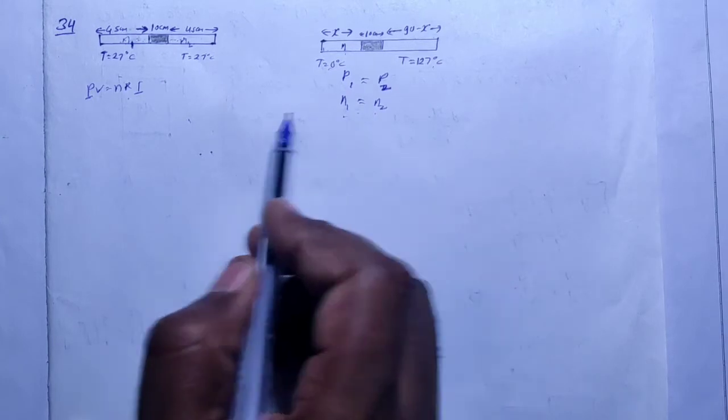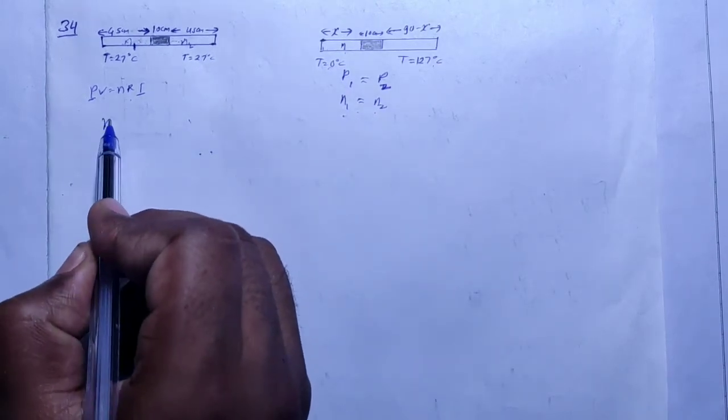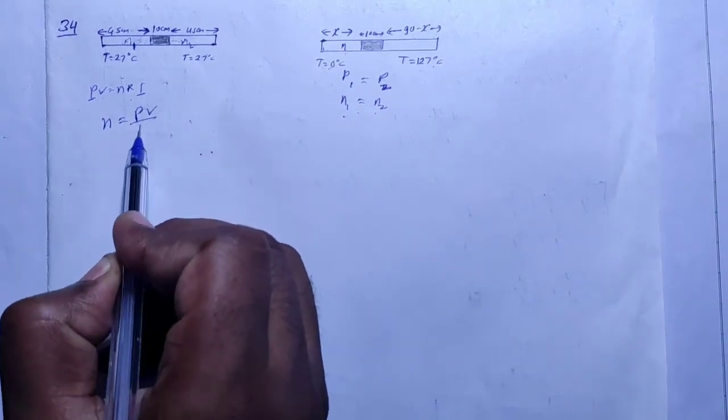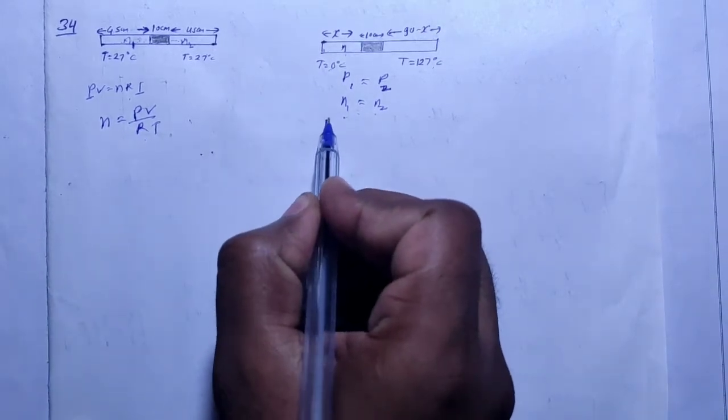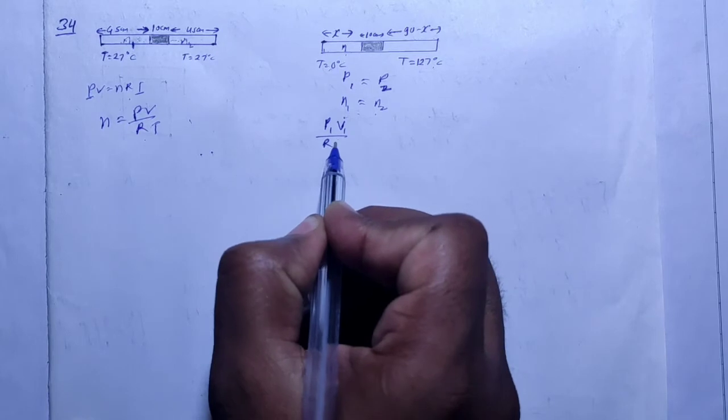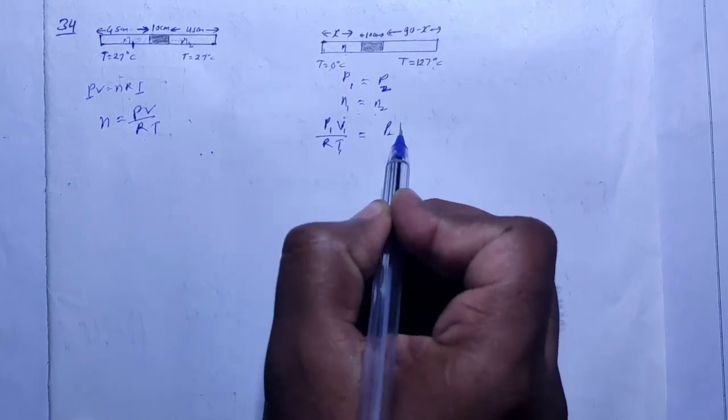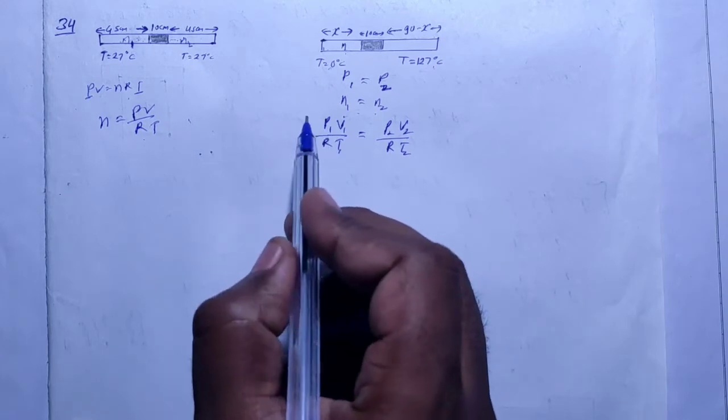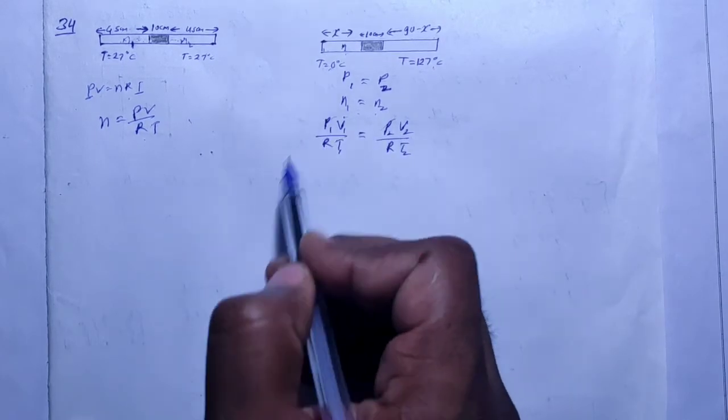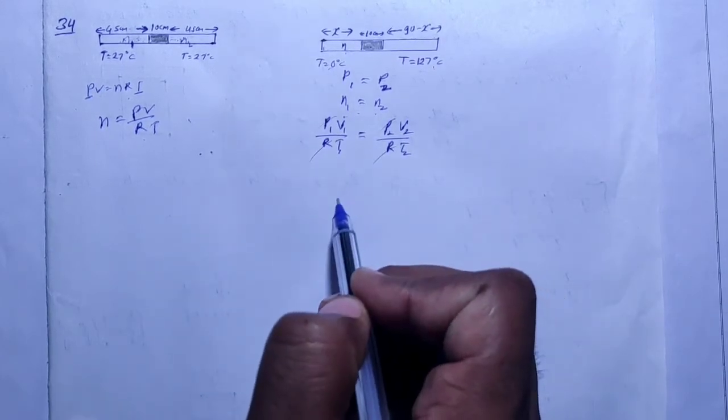The number of moles, the gas quantity here, equals the gas quantity there. These two are equal. Now using the ideal gas equation, P1 cancels out, R cancels out, right?